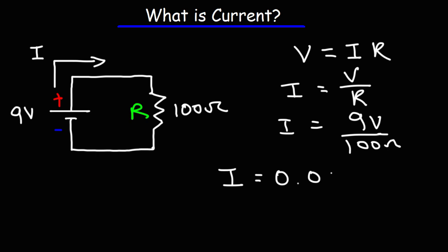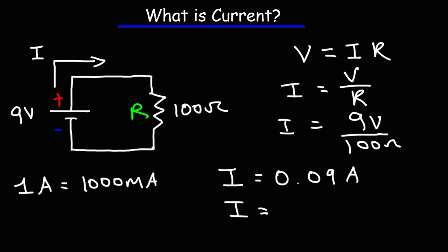The current is 0.09 amps. A current of one amp is equal to 1000 milliamps, so to convert from amps to milliamps multiply by 1000. 0.09 times 1000 is 90, so the current is also 90 milliamps. But what does this number mean?